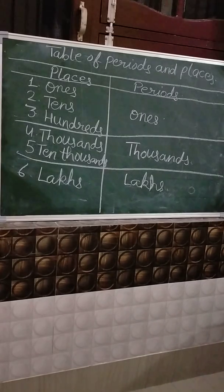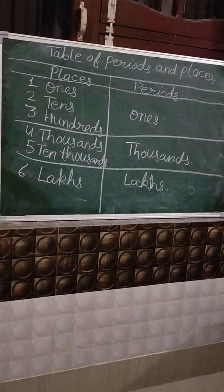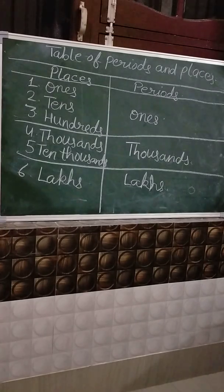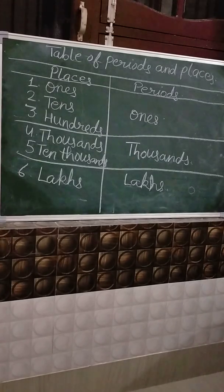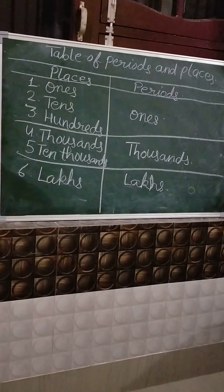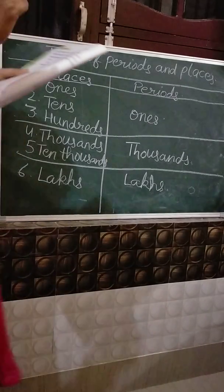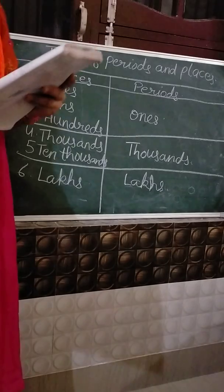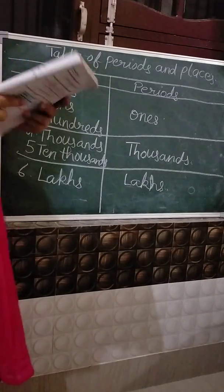Now we can solve the first and second sum of worksheet 5. The first sum is: name the three periods into which a six-digit number is grouped.